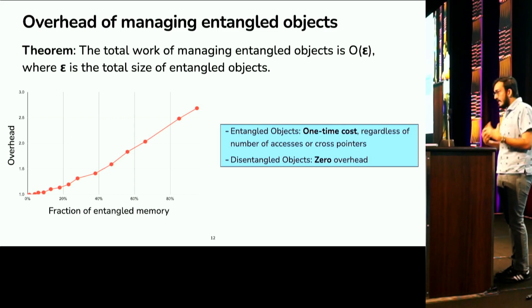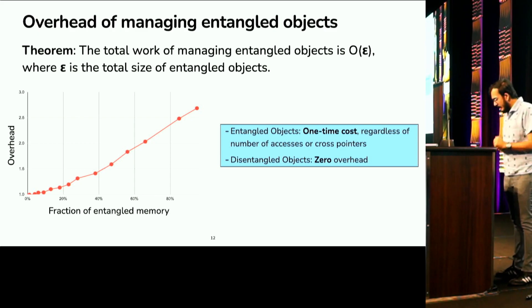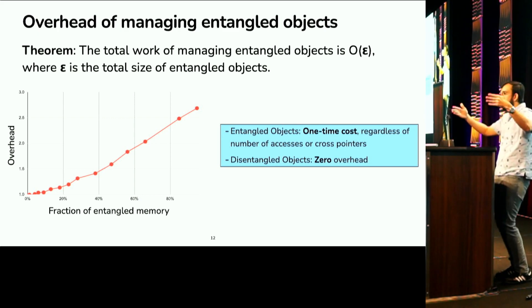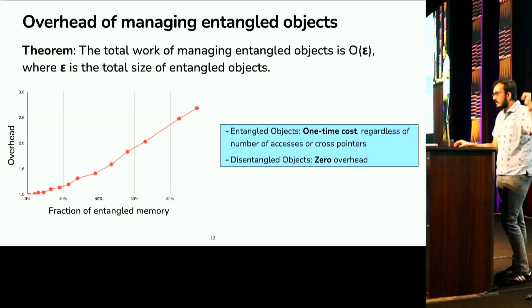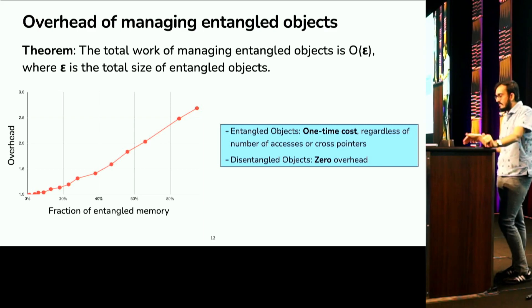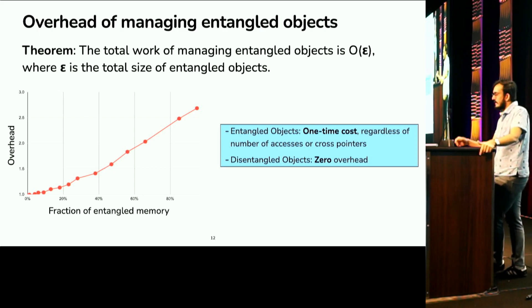Which is great because most of the objects in your program are going to be disentangled. And just to test this out, we implemented a synthetic benchmark in which the number of instructions the benchmark executes is the same, but we could vary the amount of entanglement it creates. So, the y-axis shows the time to basically run this benchmark, and the x-axis shows the amount of entanglement the benchmark creates. And we can see the time for benchmark scales linearly, which confirms the theorem, basically, that the overhead is linear. Okay.